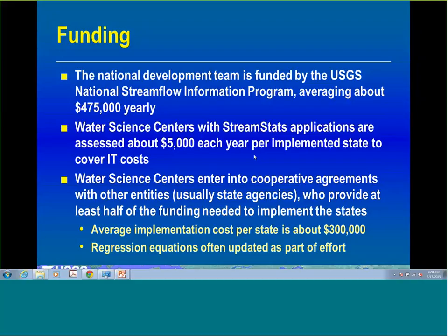For each state implemented in StreamStats, we assess the local water science center about $5,000 a year for maintaining the computer infrastructure. It's implemented on a state-by-state basis where water science centers enter into cooperative agreements with other entities, usually state agencies, who provide at least half of the funding needed to implement the states. On average, the implementation cost is about $300,000, and more often than not, regression equations are updated as part of that effort.